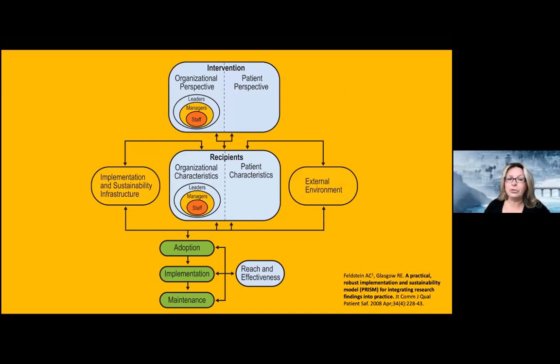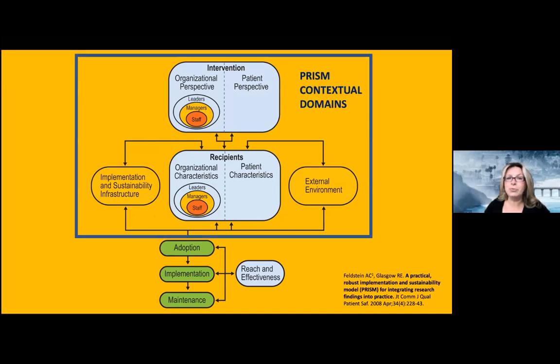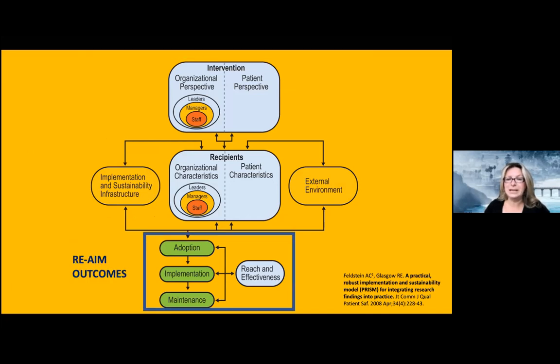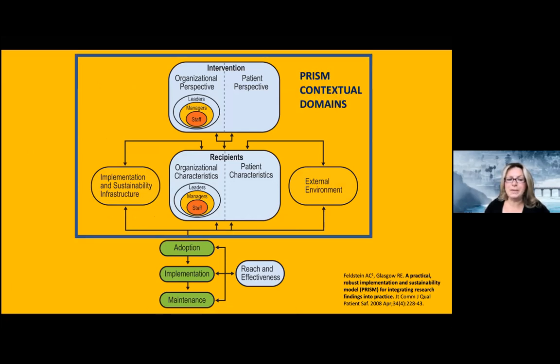PRISM, or the Practical Robust Implementation and Sustainability Model, consists of two main parts: the PRISM contextual domains and the RE-AIM outcomes. The PRISM contextual domains include multilevel considerations for the characteristics of the intervention, including the perspectives of stakeholders from both individuals and settings, the characteristics of diverse recipients, the implementation and sustainability infrastructure.